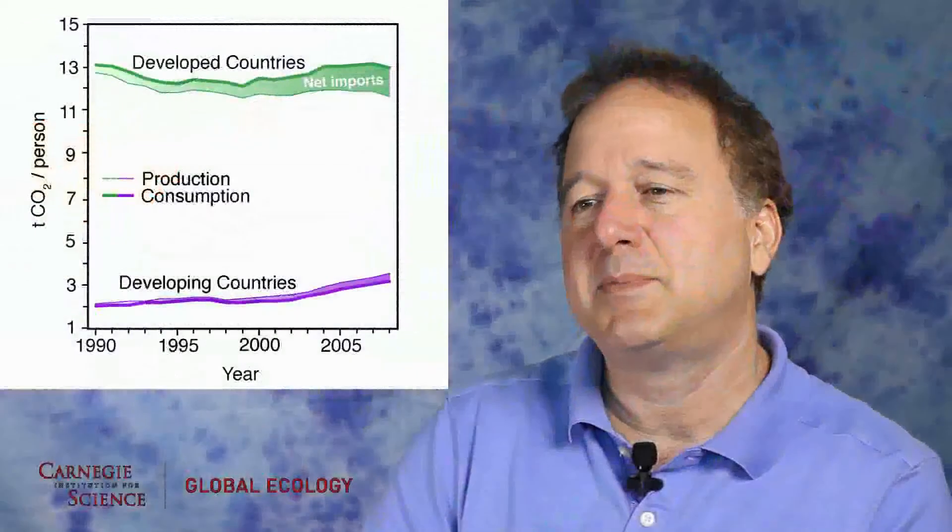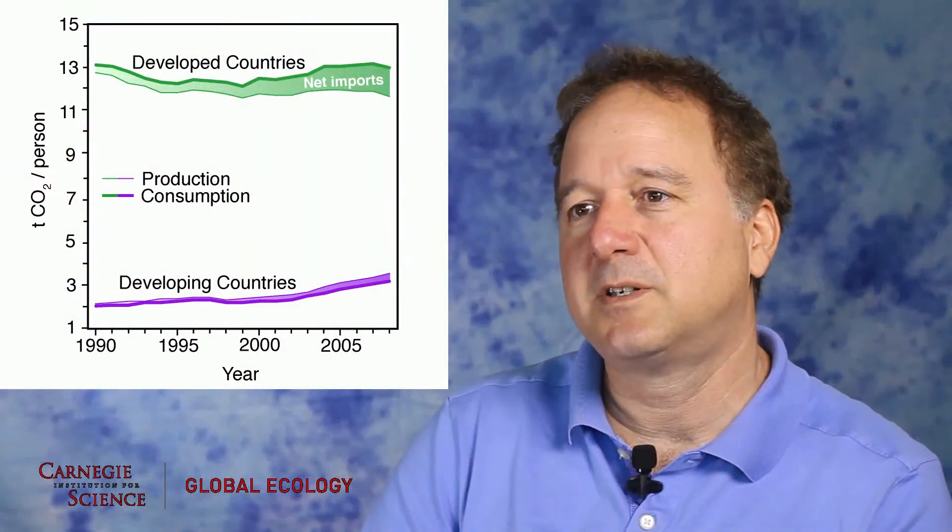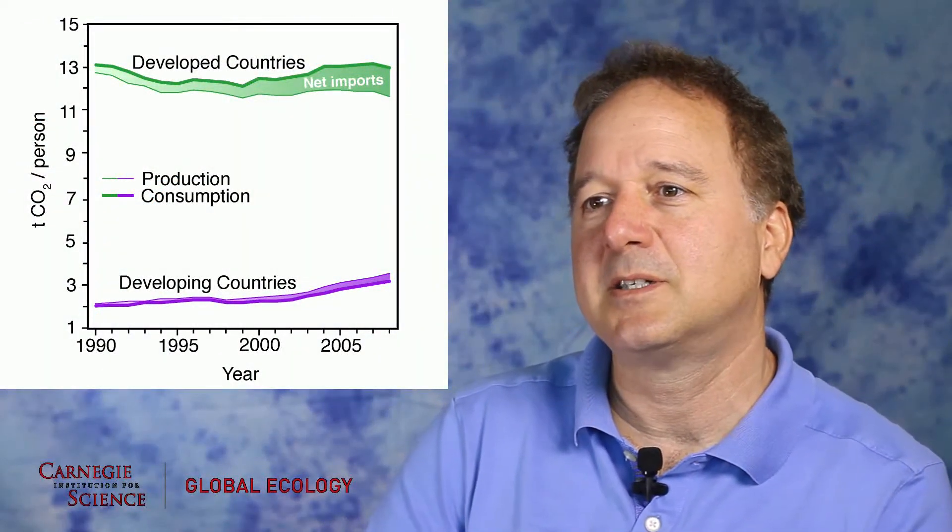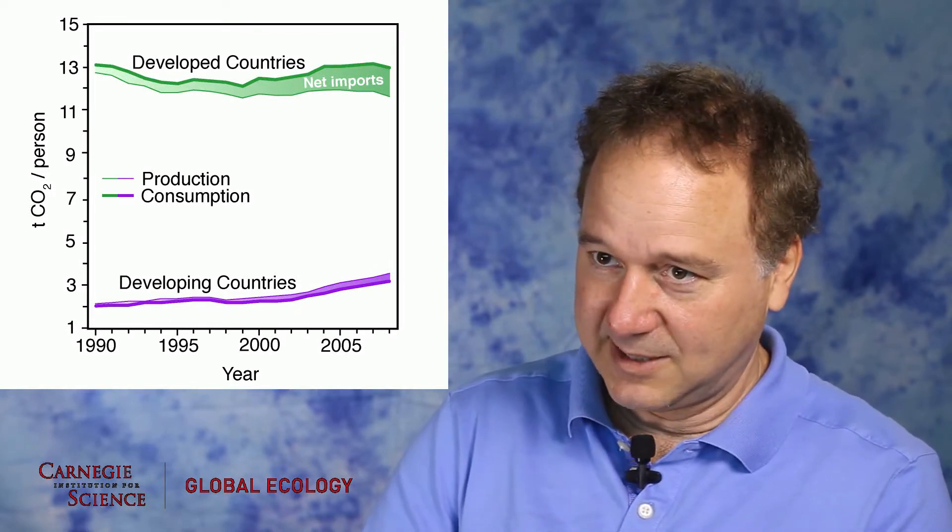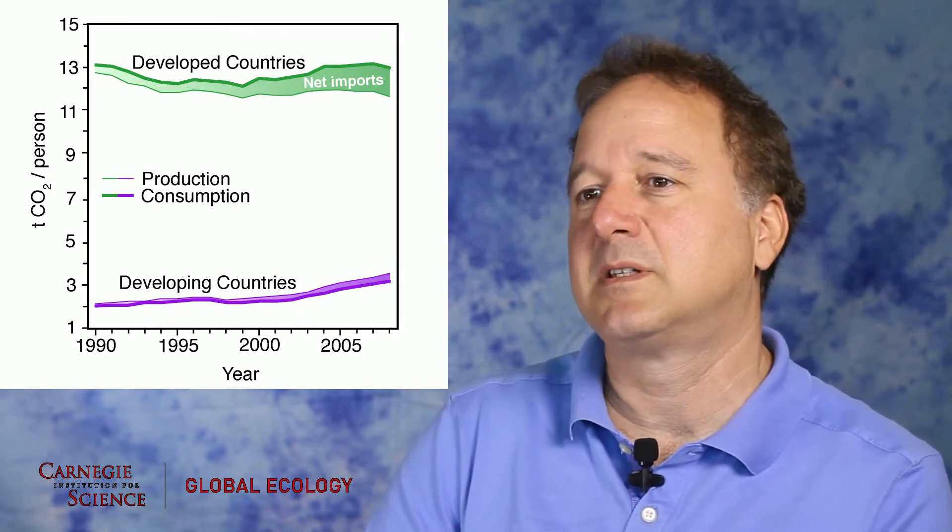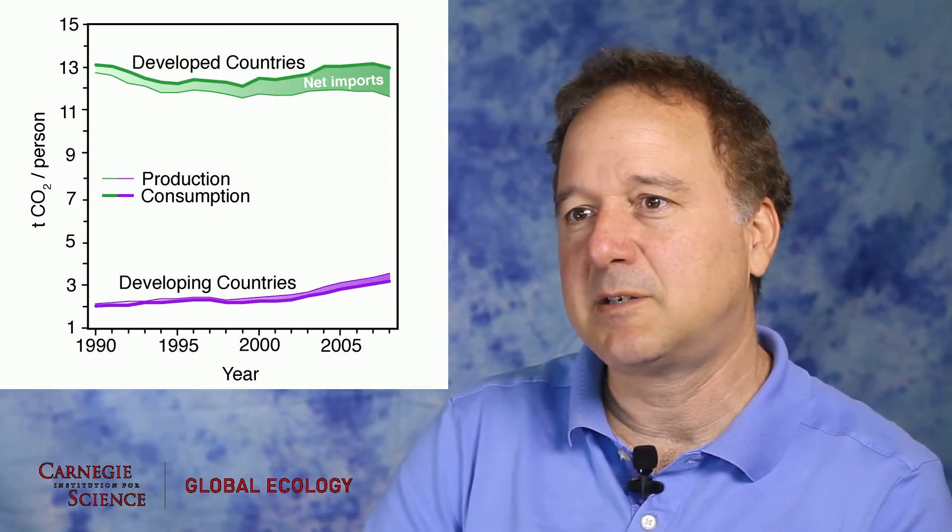This disparity becomes much starker if we look on a per capita basis because typically people in the developed world emit something like four times the amount of CO2 than do people in the developing world.